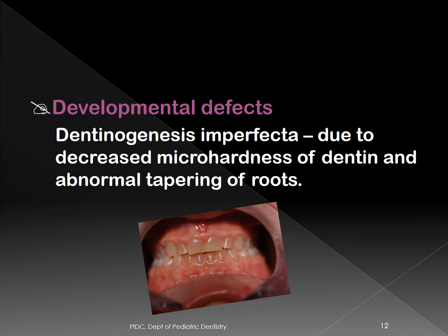Developmental defects can make teeth fragile due to problems with the organic portion — particularly dentinogenesis imperfecta. Because the dentine is imperfectly mineralized, the enamel has less support, both enamel and dentine wear off, and any traumatic injury can cause fracture of the teeth easily.